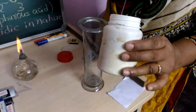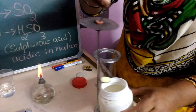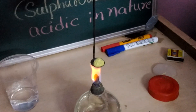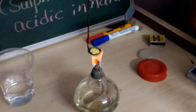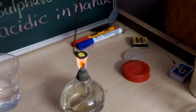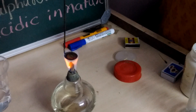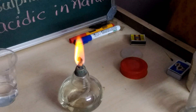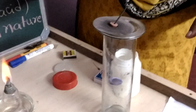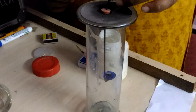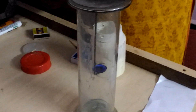This is the sulphur powder. I am taking it in a deflagrating spoon. Let us burn it. You can see the sulfur is melting and it is catching fire. Sulfur reacts with oxygen in the air — you can see the blue flame. Let us collect the gas in a collecting jar.